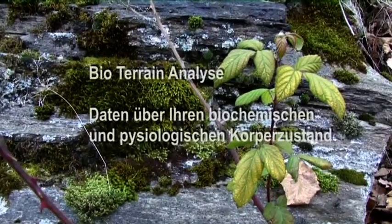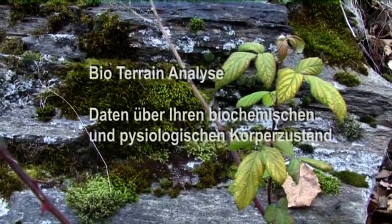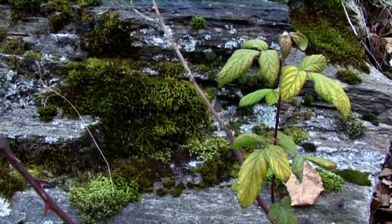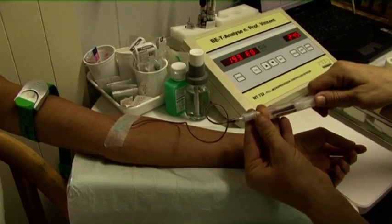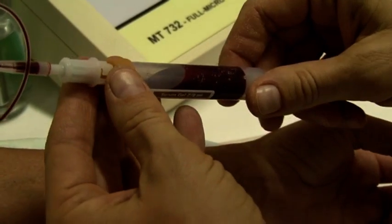Bio-Terrain Analysis is a process that gives an overview of the biological milieu of a human being. You cannot plant a seed in soil that is completely acidified. Every compartment of the body, be it the blood, the saliva, or the urine, needs a particular milieu to work in.